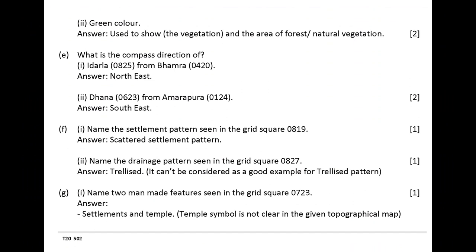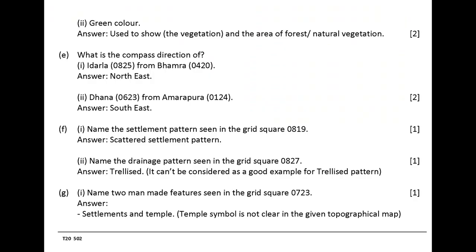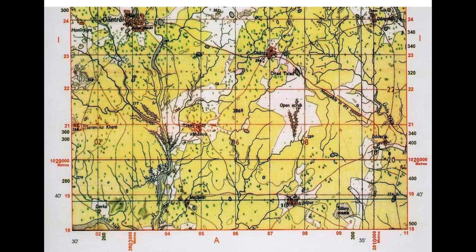Name two man-made features seen in the grid square 0723. Answer: settlements and temple, cart track. Name two natural features seen in the grid square 0218. Answer: sand dunes, streams and Souklinati.